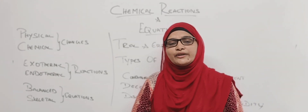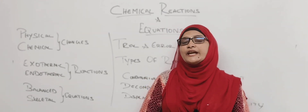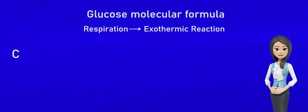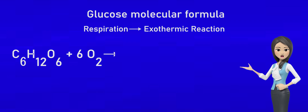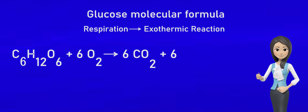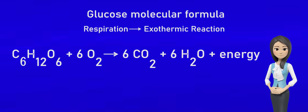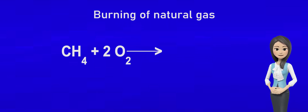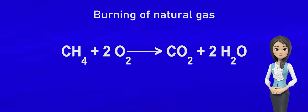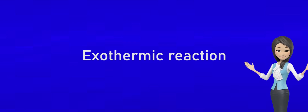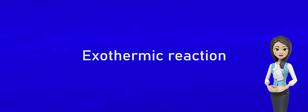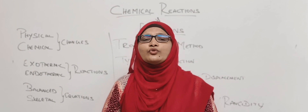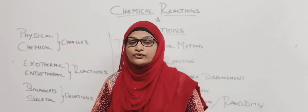We will see some examples. Respiration is also an exothermic reaction: glucose (C6H12O6) plus O2 gives carbon dioxide plus water plus energy. Burning of natural gas: methane plus oxygen gives carbon dioxide plus water. Also, magnesium plus oxygen gives magnesium oxide plus heat — this is an exothermic reaction.